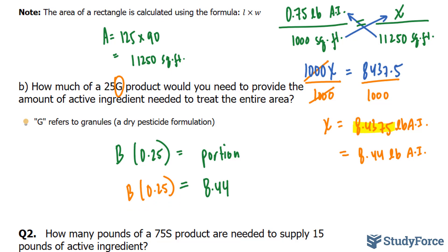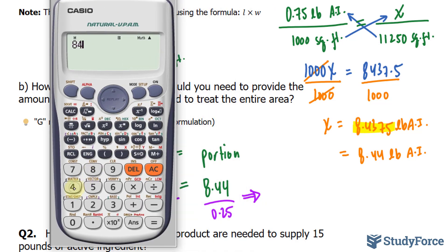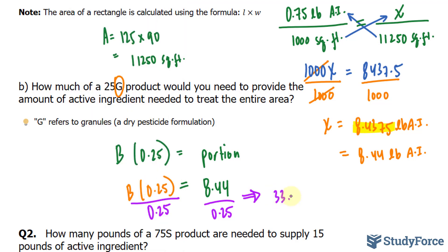Again, using the same algebraic technique as before, to isolate for B, we will divide both sides by that factor. We will end up with B, which represents the amount of product. So 8.44 divided by 0.25 gives us around 33.76 pounds of product are needed. You'll go to the store, and if it's rated at 25G, the package is, let's say, 33.76 pounds, then you'll be getting 8.44 pounds of active ingredient, which is what does all the work, in this case, being a pesticide.